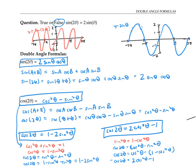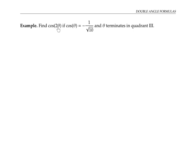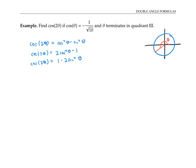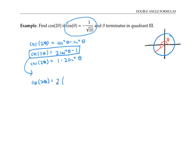Now let's use these formulas in some examples. Let's find cosine of two theta, given that cosine theta equals negative one over root 10 and theta terminates in quadrant three. We have a choice of three formulas for cosine of two theta. I'm going to choose the second one, two cosine squared theta minus one, because it only involves cosine theta on the right side and I already know that value. Plugging in, cosine of two theta equals two times negative one over root 10 squared minus one, which simplifies to two tenths minus one, or negative eight tenths, which is negative four fifths.